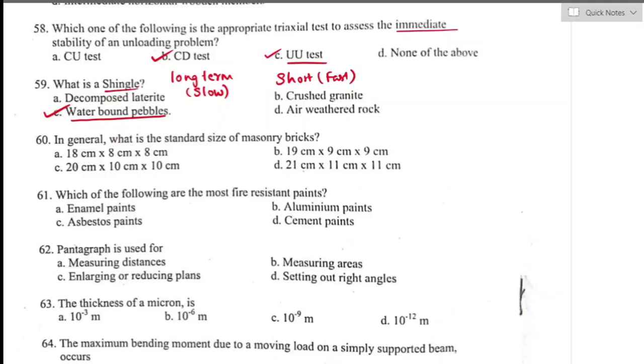Question number sixty: the standard size of a masonry brick is 20 cm × 10 cm × 10 cm. Option C is the right answer.